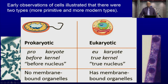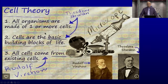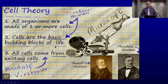Here we see bacteria — today we have prokaryotic cells. And here is a eukaryotic cell that has a nucleus. This led to the cell theory, which has three components: all organisms are made of one or more cells; cells are the basic building blocks of life — you have to have cells to be alive, rocks don't have cells; and cells come from other cells. Those are the three components.